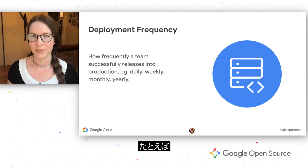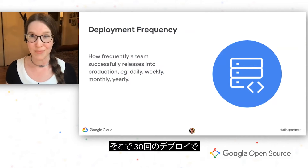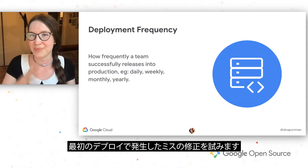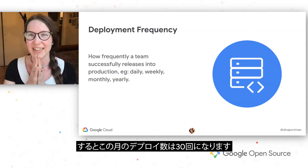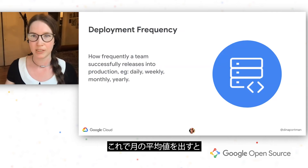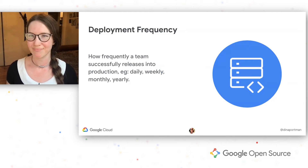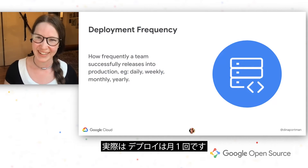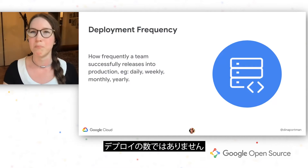For example, say in the course of a month you have one day where you do a deployment. Maybe it goes a little wonky, and so you do 30 more deployments to try to fix all of the mistakes that happened with the first deployment. Then we have 30 deployments in this month, and when we average it out over the month, we have an average daily deployment of one — we're deploying daily. No, you are deploying monthly. So what we want to look at is how frequently we're deploying, not how much we're deploying.